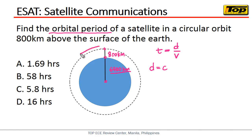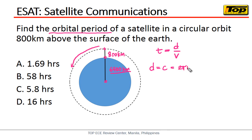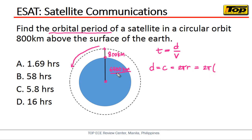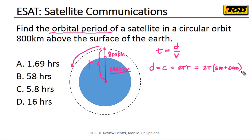The satellite travels in this direction all the way around back to the same starting point, so the distance it covers is the circumference of its circular orbit. That will be 2πr, where r is the total radius — which is 2π times 6,400 kilometers plus the 800 kilometers height. That entire sum is our r.